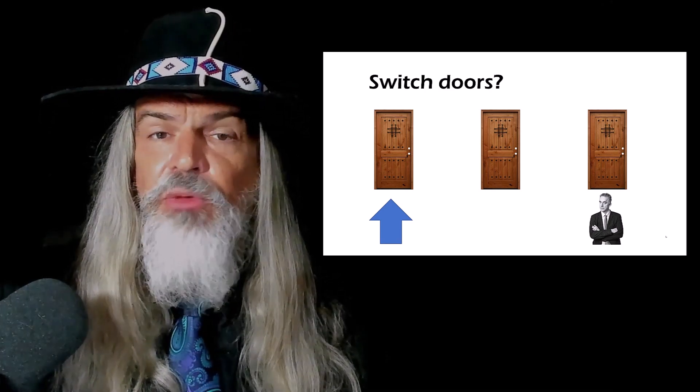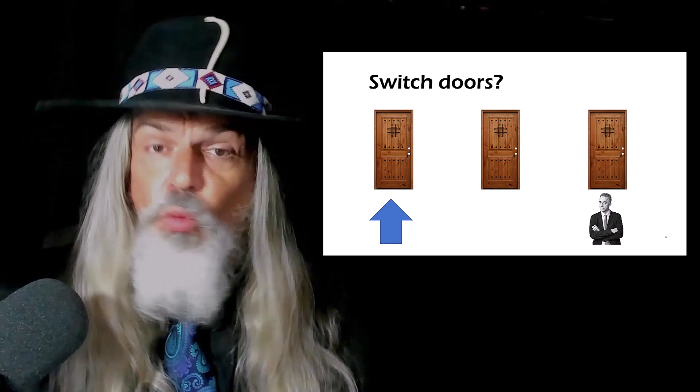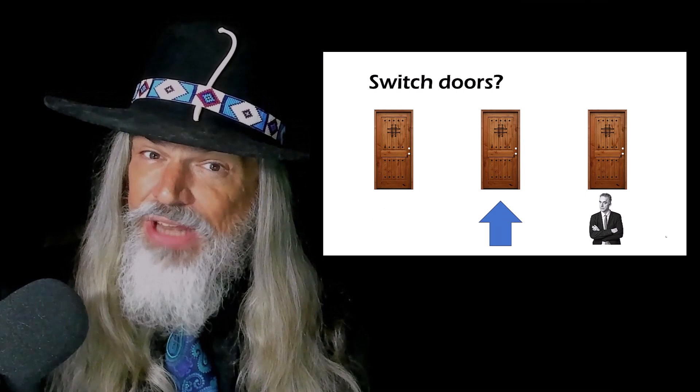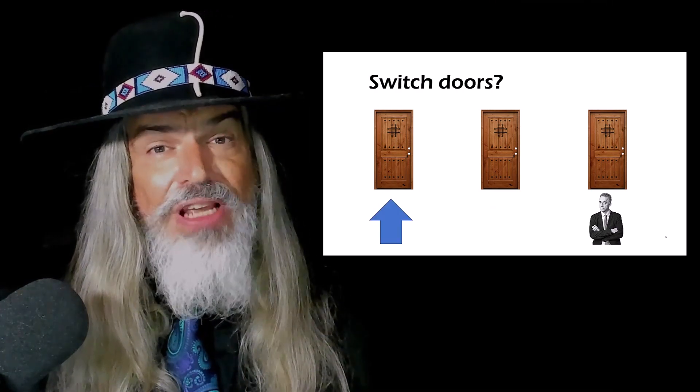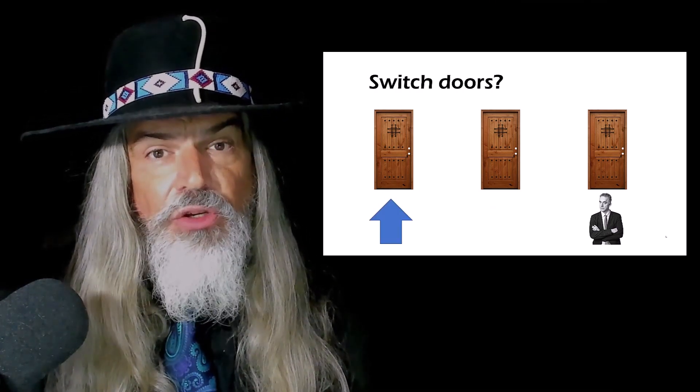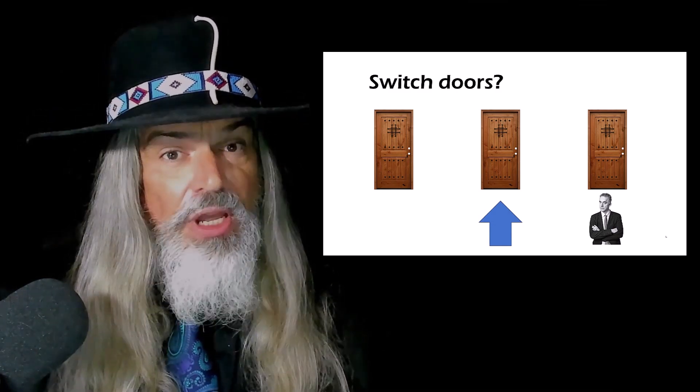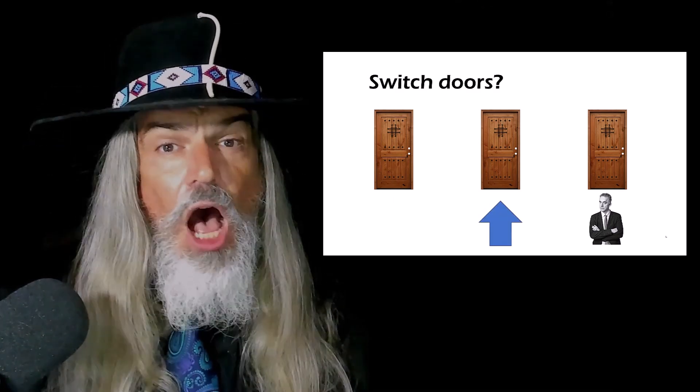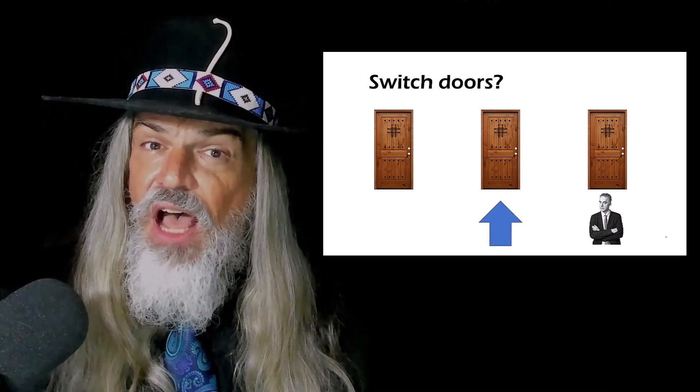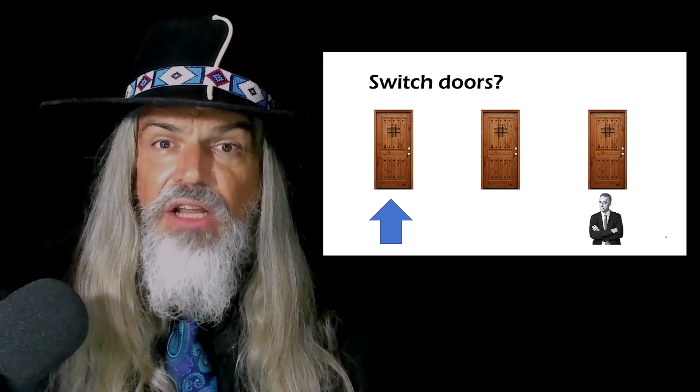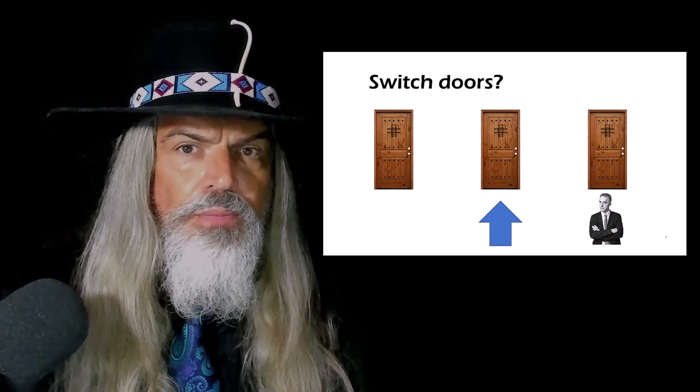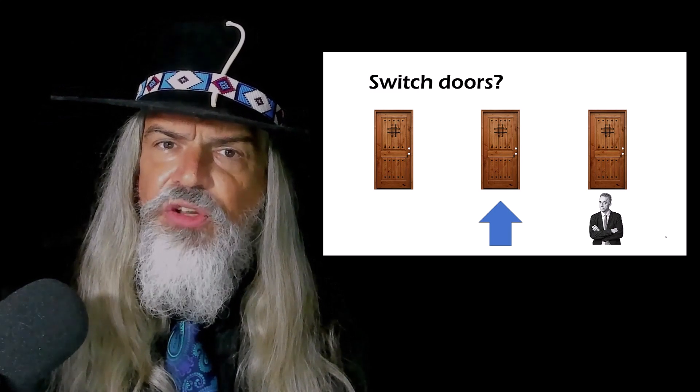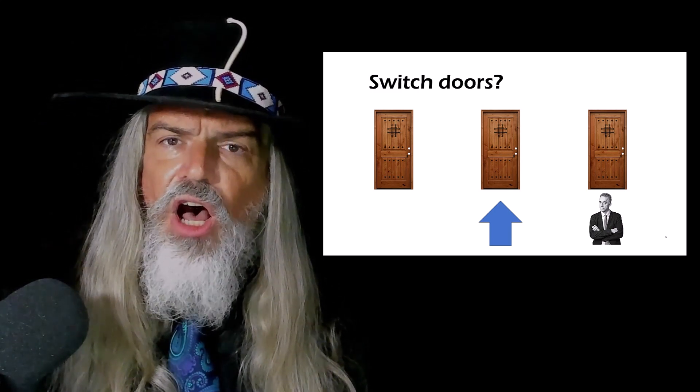After Monty reveals the unchosen door with a zonk, he asks you if you would like to keep your original door choice or change to the other unopened door. So, you can either keep your original choice or you can switch and choose the other door you originally did not choose and that Monty is not yet opened. So, what do you do? Do you keep your original choice or do you change and switch to the other unopened door?